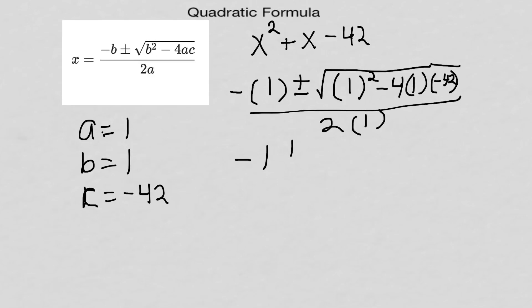It's gonna be negative 1 plus or minus square root of one minus four times one, which is four, times negative 42, which is negative 168. So I've got minus a negative there over top of 2.